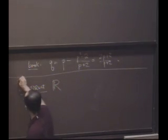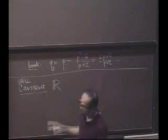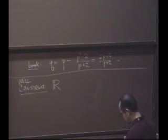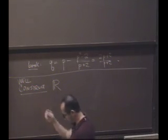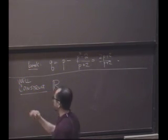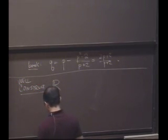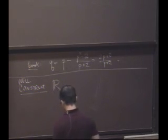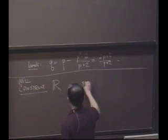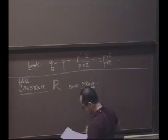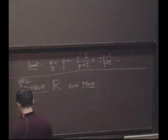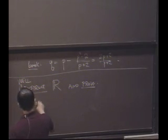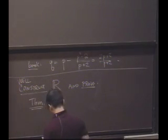So we'll do this. We'll construct R only involving rationals. And we'll do so in such a way that it'll be obvious that it has the least upper bound property. Okay? So we'll construct R and then prove this is probably the biggest idea that, well, so here's the theorem, the big theorem.